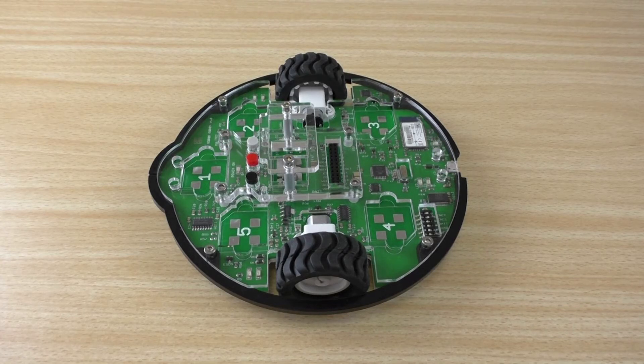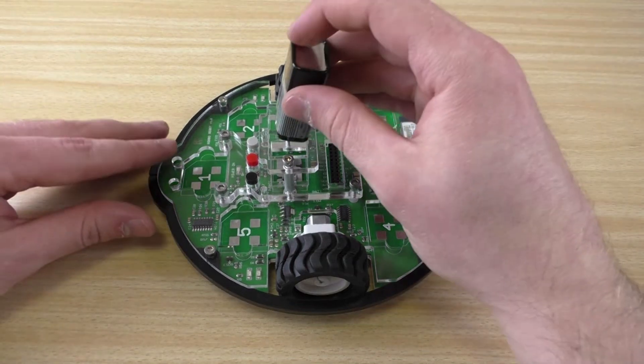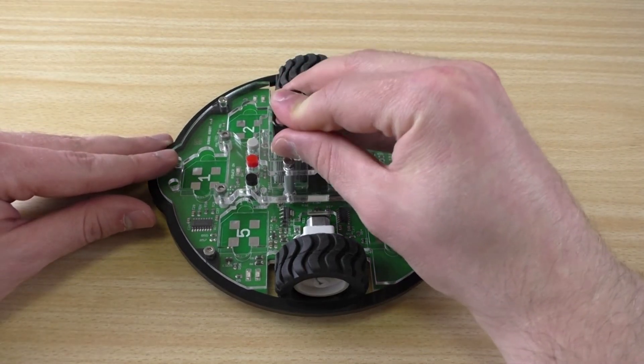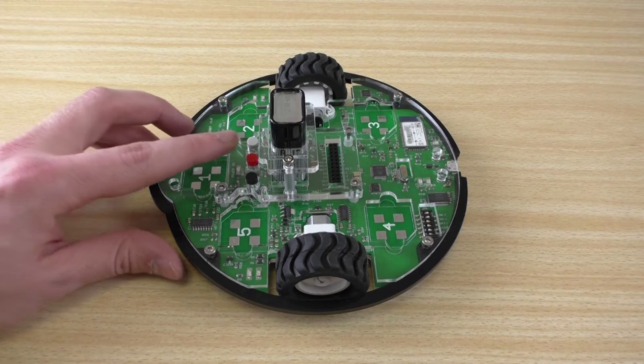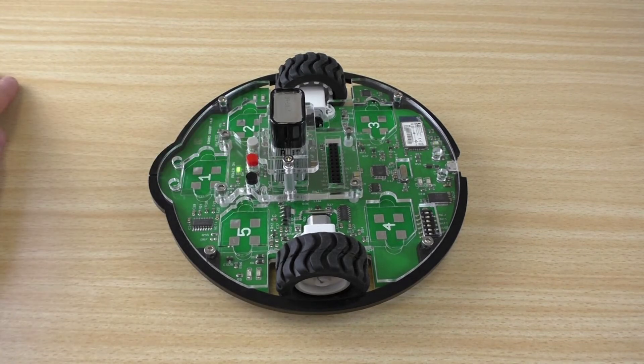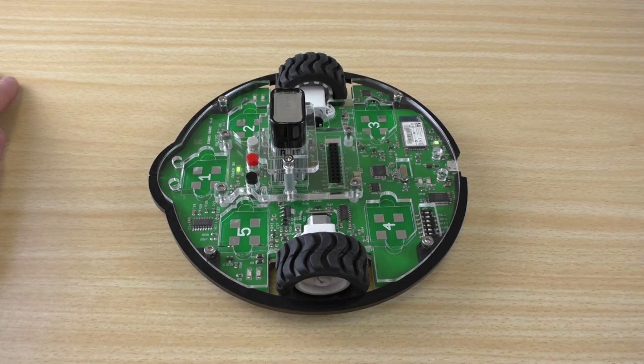Besides supplying the robot with USB power, you can also use a portable power supply, such as a 9V PP3 type battery. This will enable you to use Bluetooth in order to program and control the robot.